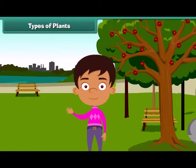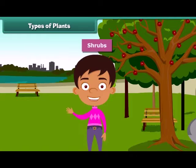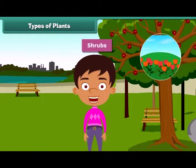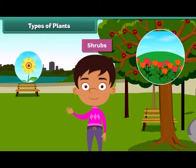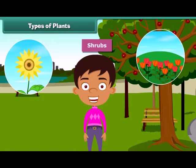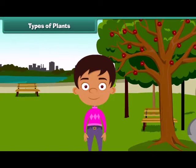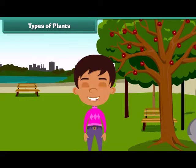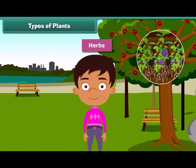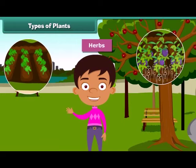Plants which are smaller than trees are called shrubs, such as rose and sunflower plant. Besides, some plants are very small and are called herbs. Brinjal and spinach are examples of herbs.